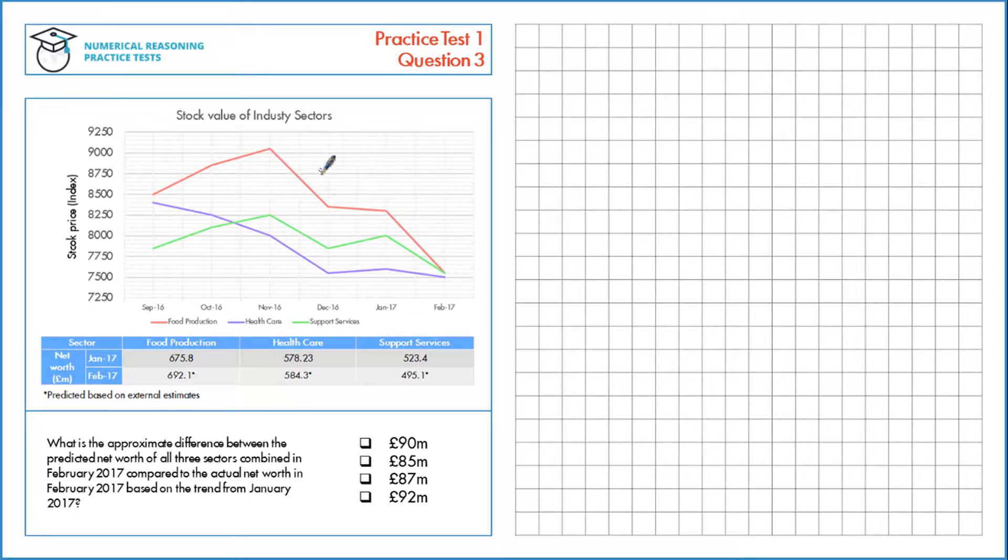First, let's look at the trend between these two points, January 2017 and February 2017. For January, the total stock price for all of these is $8,300 plus $8,000 plus $7,600, which is $23,900.